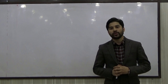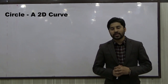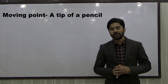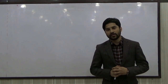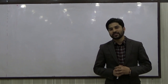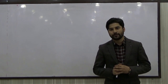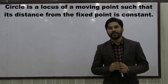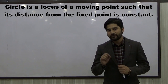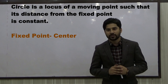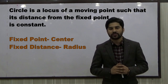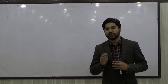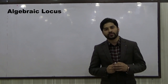A circle is basically a two-dimensional curve. Let's say you have a moving point P — the moving point is nothing but the tip of your vessel. You draw a curve such that its distance from a fixed point is constant. So the definition of circle is that it's a locus of a moving point such that its distance from a fixed point is constant. That fixed point is called the center of the circle and that fixed distance is called the radius of the circle.